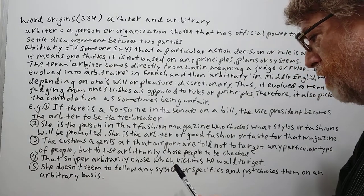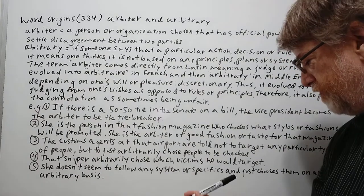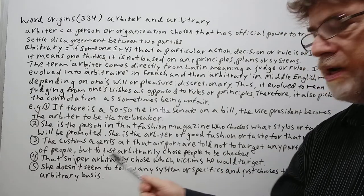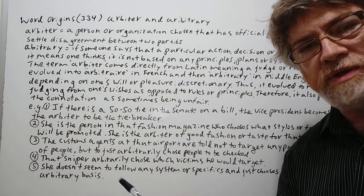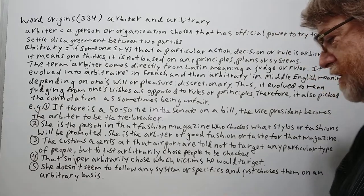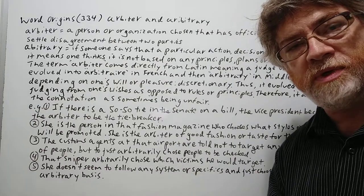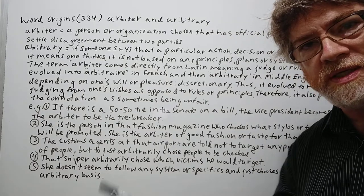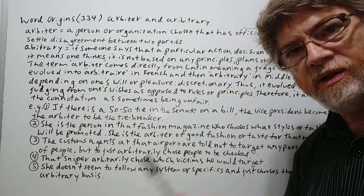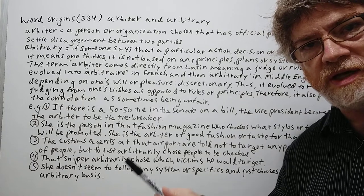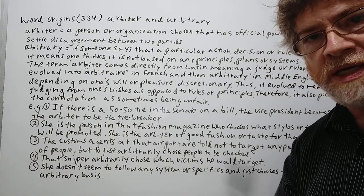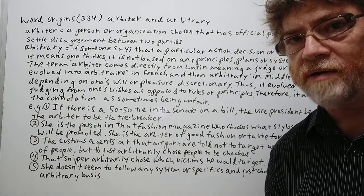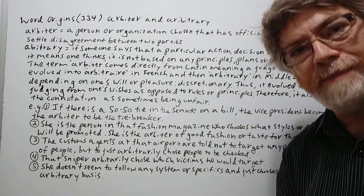Number five: She doesn't seem to follow any system or specifics and just chooses on an arbitrary basis. This is a very general one — sometimes we say somebody chooses something on an arbitrary basis; they're not specifically looking for any particular details in making their choice — just whatever they feel like. Anyway, I hope you got it, I hope it's clear and informative. Thank you for your time. Bye-bye.